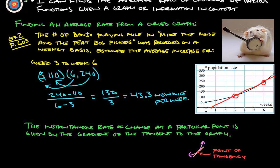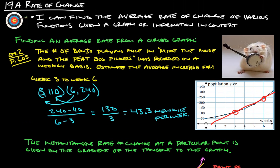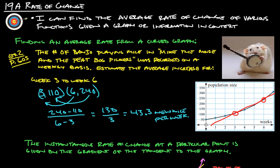You should now be able to say that you can find the average rate of change of various functions given a graph or information in context. If you have any questions, please ask. Thanks.